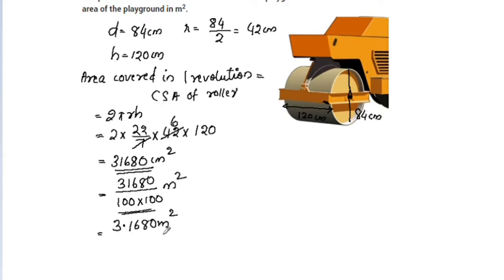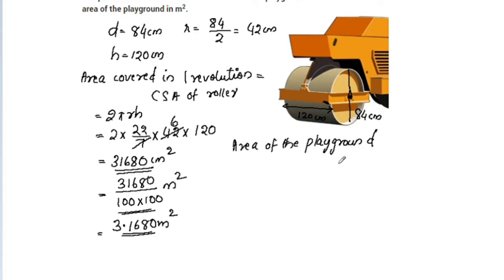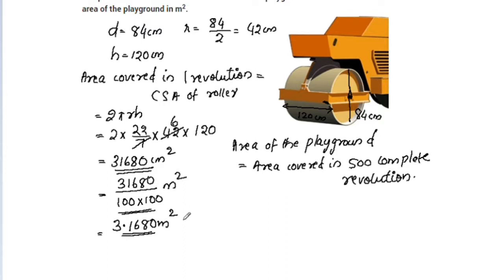The area covered in one revolution equals 3.168 m². Now we multiply this by 500 revolutions.